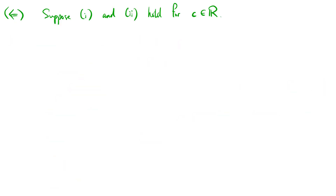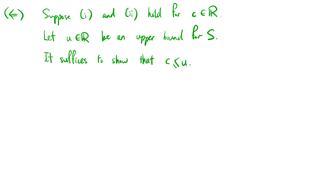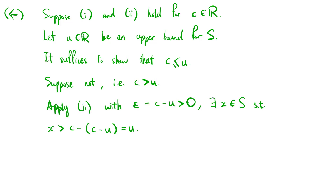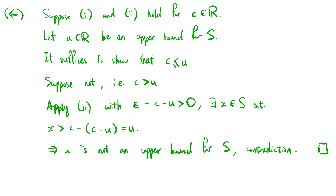Conversely, suppose the two conditions hold for real number c. Let real number u be an upper bound for s. It suffices to show that c is less than or equal to u. Suppose this is not the case; in other words, c is greater than u. Now apply the second condition with epsilon equals c minus u, which is greater than 0. Then there exists x in s such that x is greater than c minus (c minus u), which equals u. This implies that u is not an upper bound for s, which is a contradiction. This completes the proof.